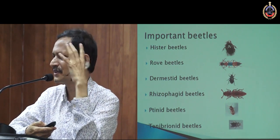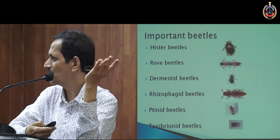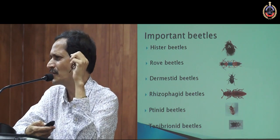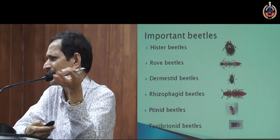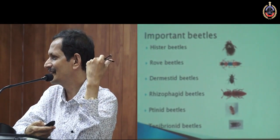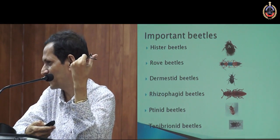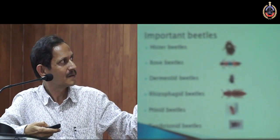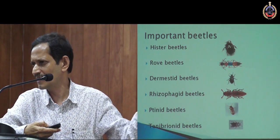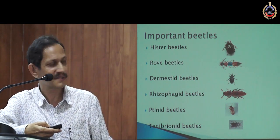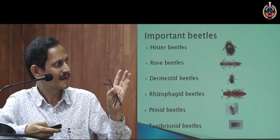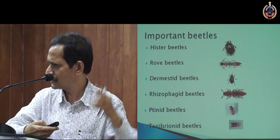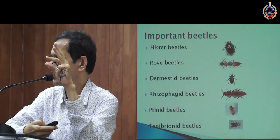Beetles come only later, after the fly activities. They arrive to feed on parts of the body like skin and hair, or to eat the dipteran fly larvae. The different types of beetles which arrive include Hister beetles, rove beetles, dermestid beetles, rhizophagid beetles, tenebrionid beetles — this is the order of arrival of these beetles on a dead body.